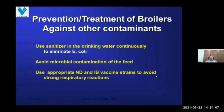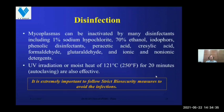Prevention and treatment of broilers against other contaminants is very important. Use of sanitizers in the drinking water continuously to eliminate E. coli-like organisms and avoid microbial contamination of the feed. Use of appropriate Newcastle disease and IB vaccines with appropriate strains to avoid strong respiratory reactions. Disinfection is also key — mycoplasmas can be inactivated by many disinfectants including sodium hypochlorite, 70% ethanol, iodophors, phenolic disinfectants, peracetic acid, cresylic acid, formaldehyde, glutaraldehyde, and ionic and nonionic detergents. UV irradiation or moist heat of 20 minutes are also effective. It is extremely important to follow strict biosecurity measures to avoid reinfections.